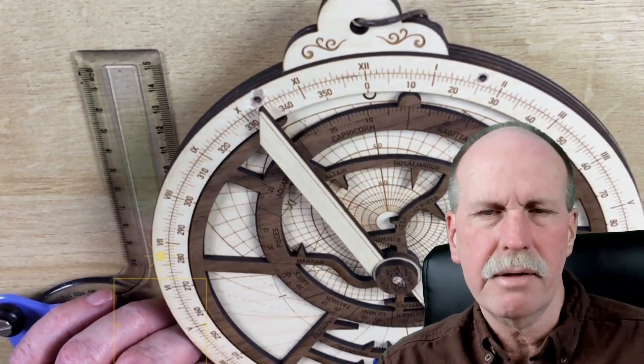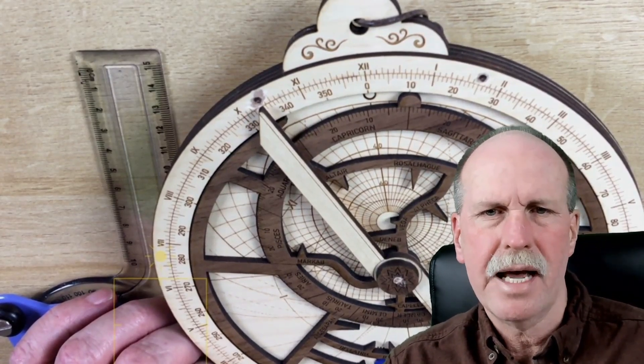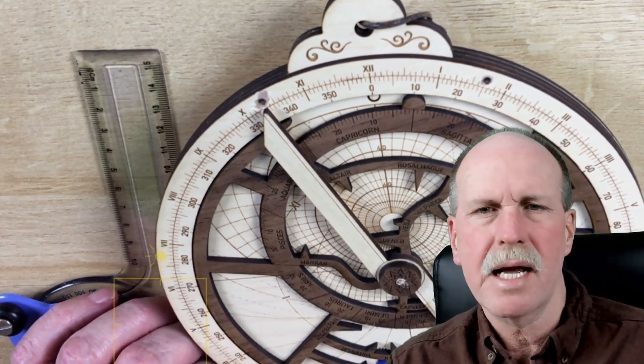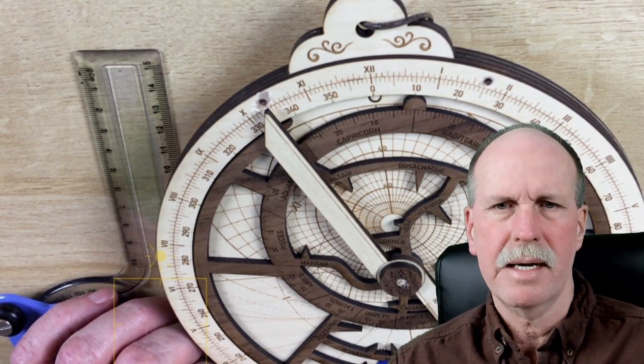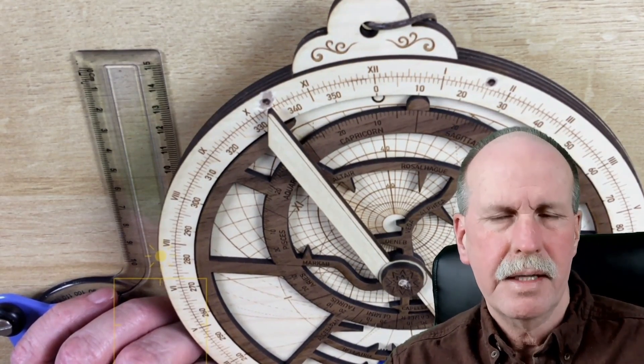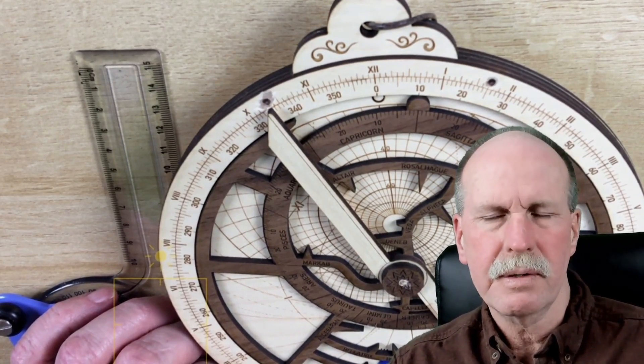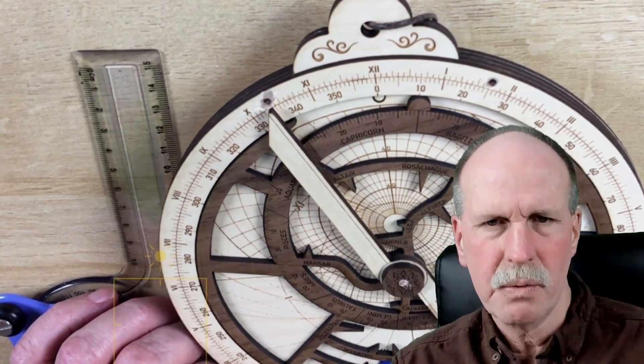As you'll recall, when we calculated the time using the astrolabe earlier, we got a time of 10:25, yet in reality the actual time was 11:15. Then we just went through the longitudinal correction and the equation of time to see why that is correct.